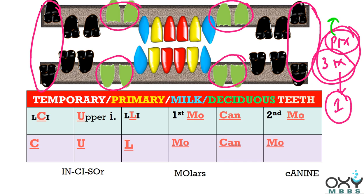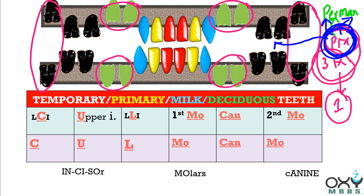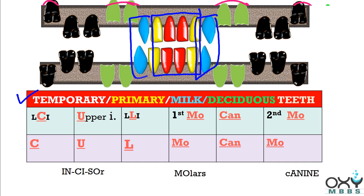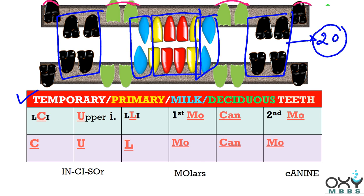The pronunciation of 'premolars' and 'permanent' are similar, so premolars always say: we will always be permanent dentition only. We have nothing to do with temporary dentition. So in primary or temporary dentition, these 8 incisors, 4 canines, and 8 molars appear — meaning a total of 20 teeth appear as primary or temporary dentition.